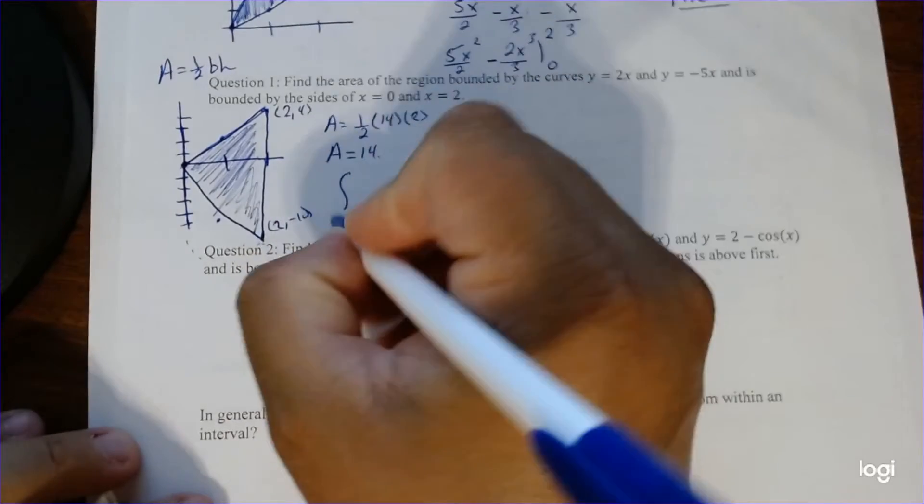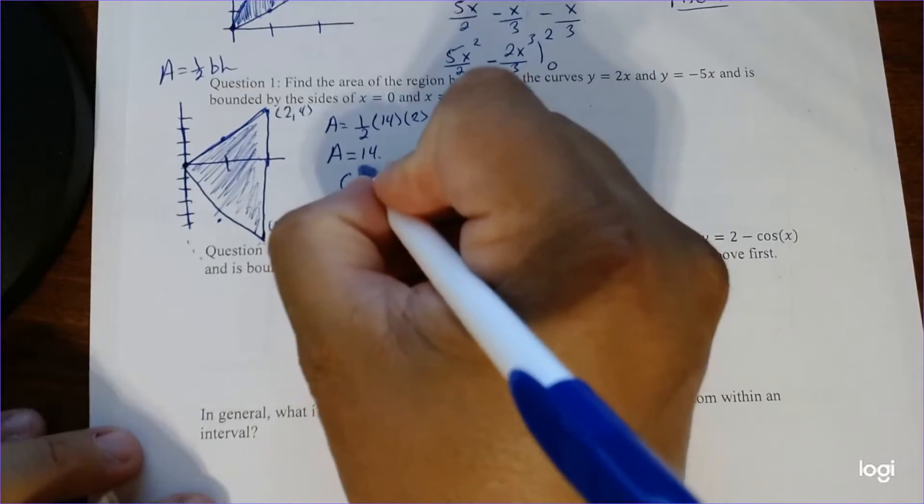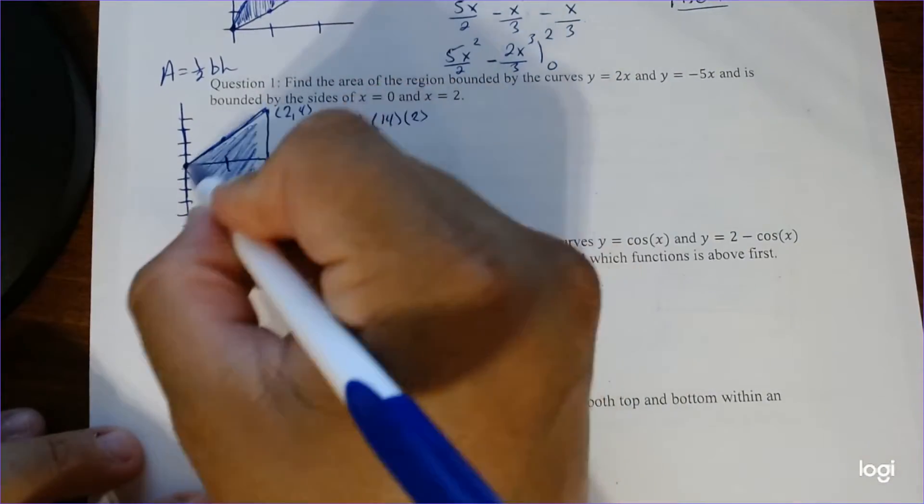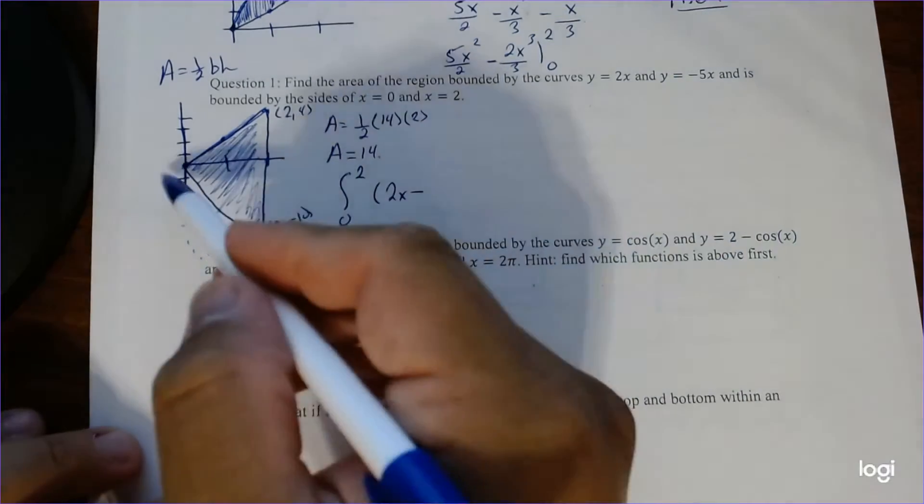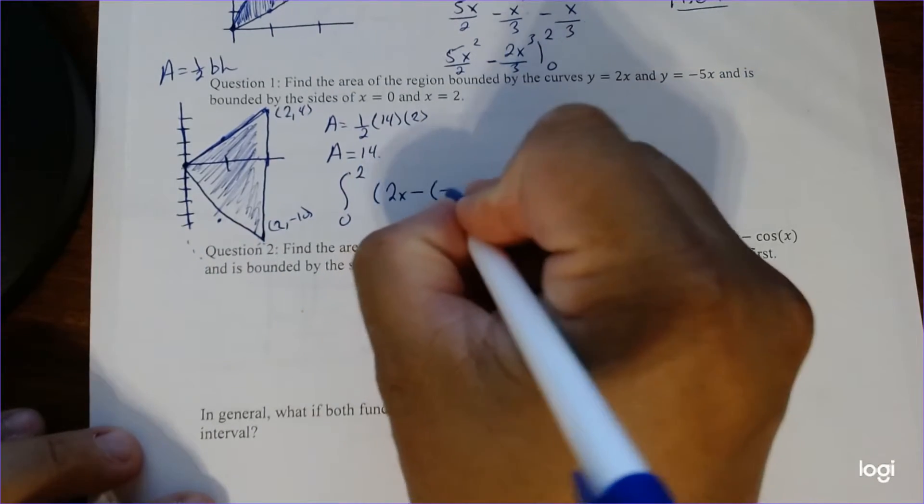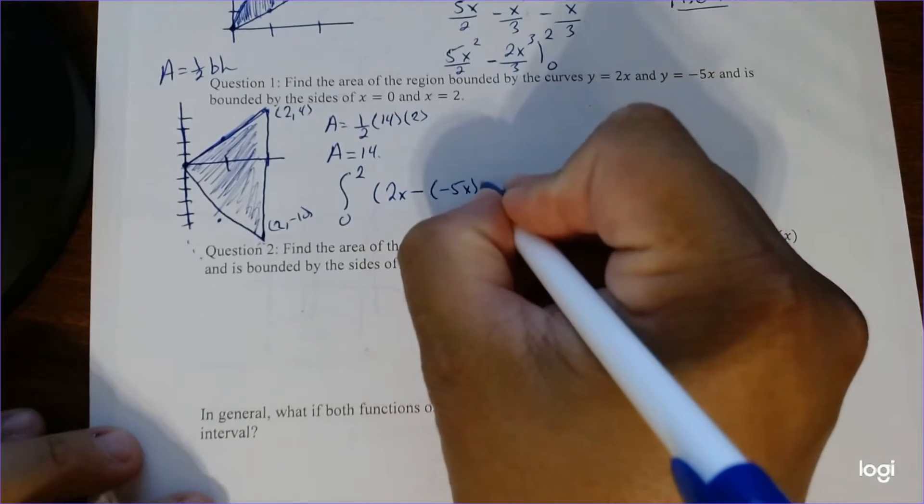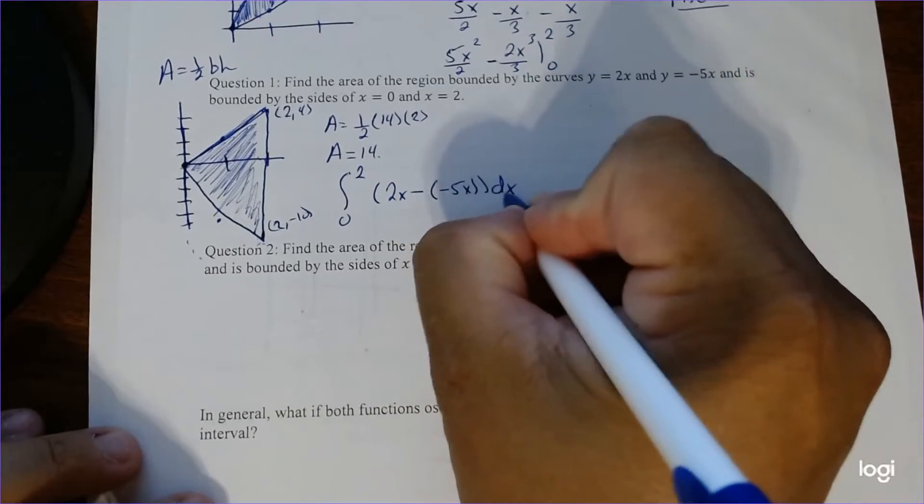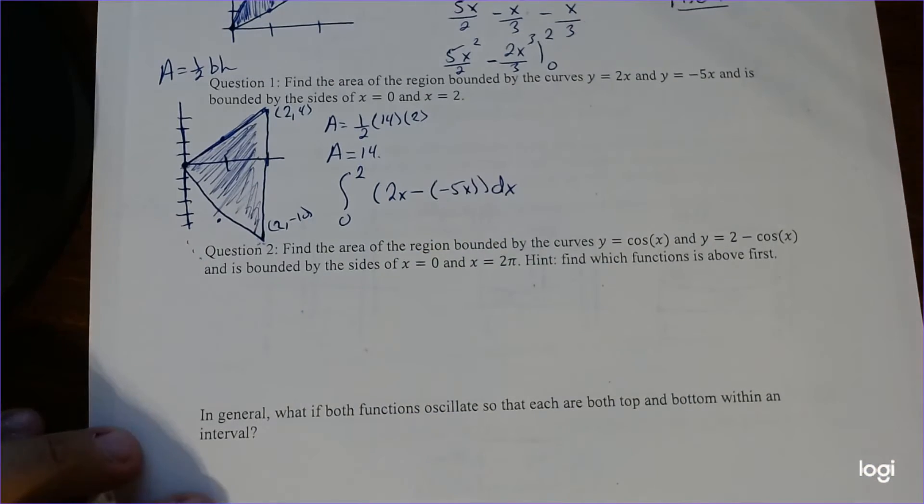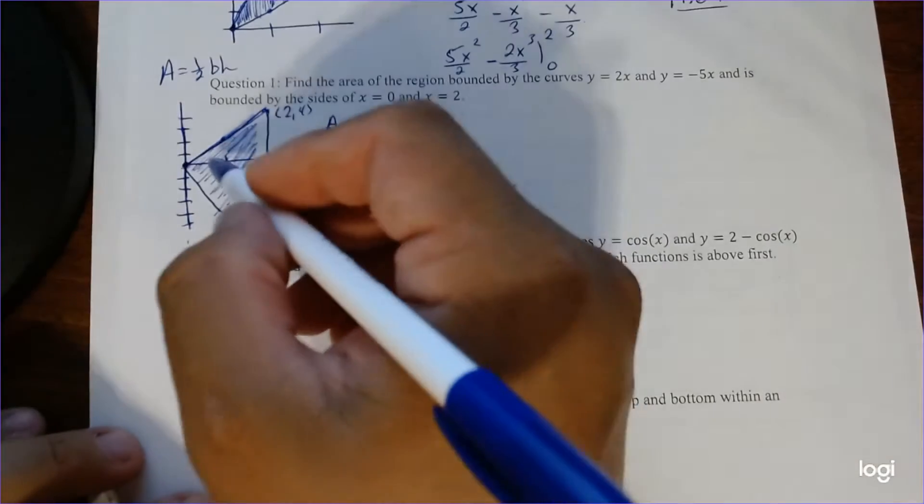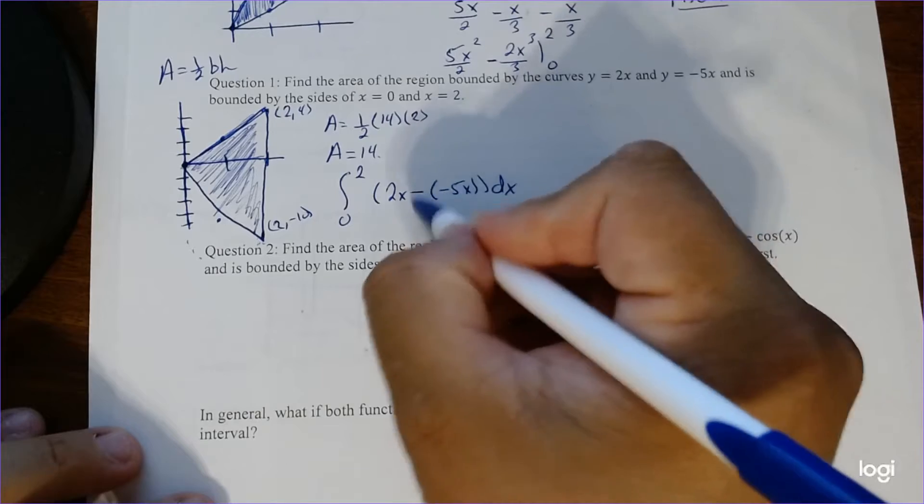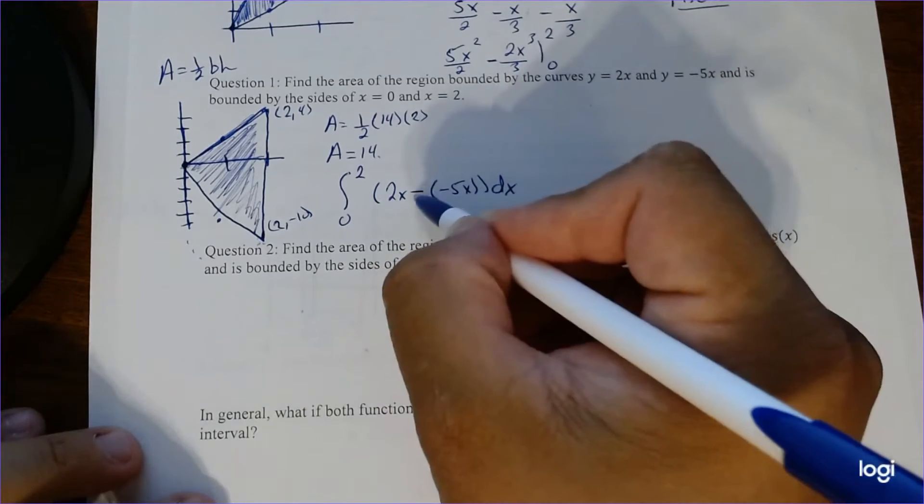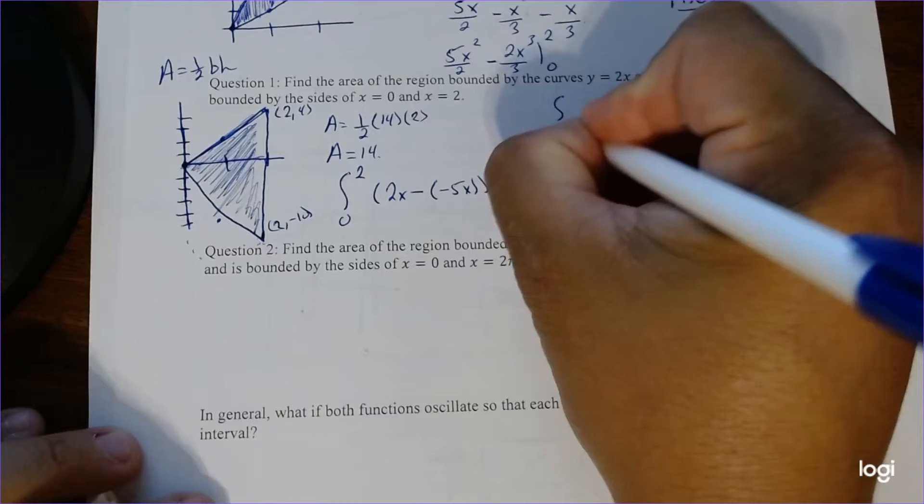So let's see if it actually does the same thing if we do it the calculus way. So this is going to be integral from 0 to 2, where the top function is this one here, which is 2x minus the bottom function, which is going to be that. So minus negative 5x dx. So notice this becomes, like I said earlier, right, when it's underneath, notice the answer ends up being positive. So this is going to be positive 5x. So 2x plus another 5x gives you a total of 7x.